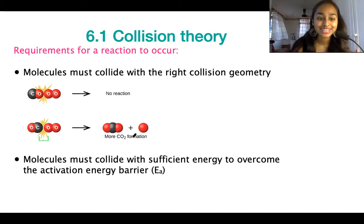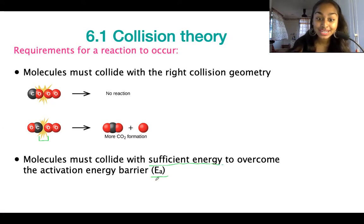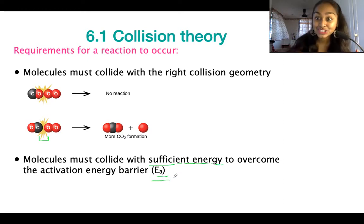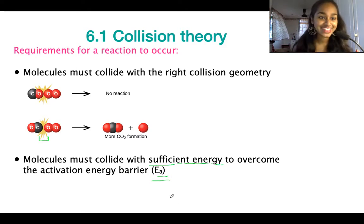The second requirement is that the molecules must collide with sufficient energy to overcome the energy barrier, or to have an energy greater than the activation energy. The activation energy is the minimum energy required to start a reaction, so for a collision to generate a reaction it needs to have more energy than the activation energy. Those are the two main principles of collision theory.